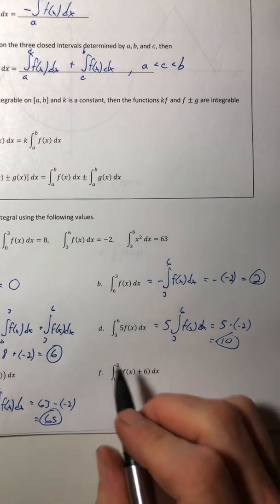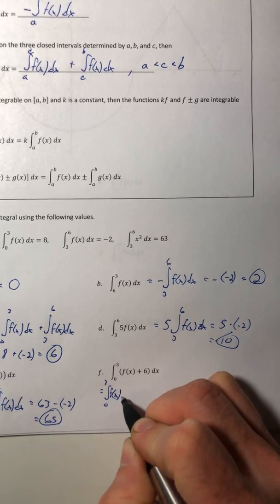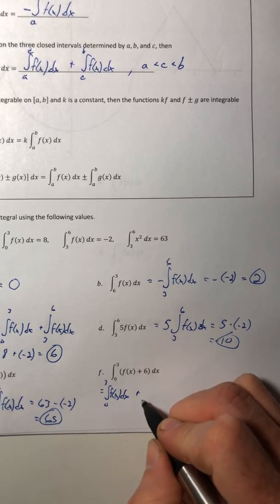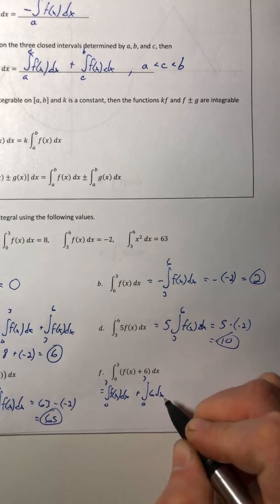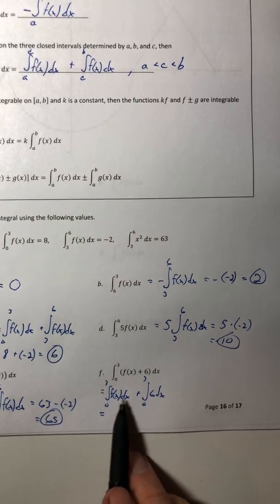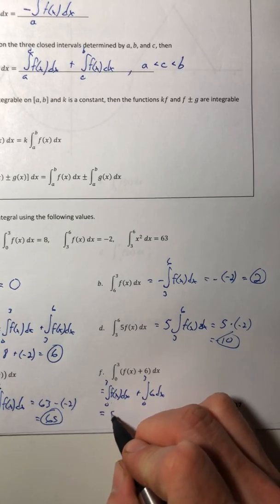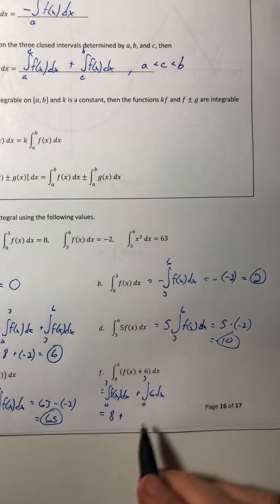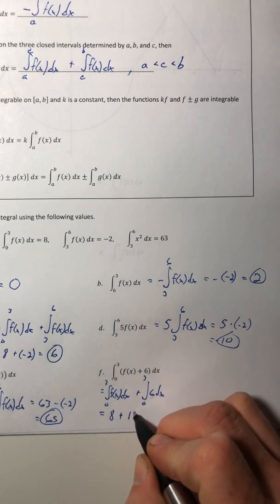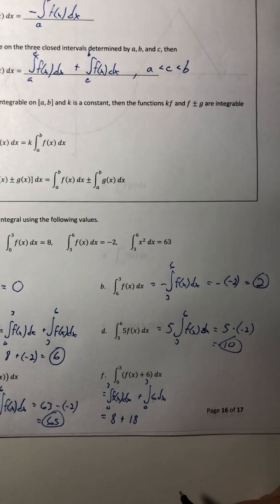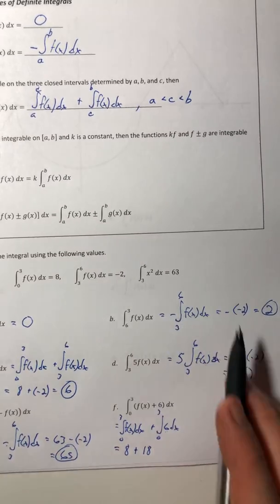Alright, now this last one, I'm going to do the same thing. I'm going to split it. So this one right here from 0 to 3, that was 8. And then this one, the 6, that one's going to equal 18. You're going, well how did you know that? It's like, just not any of these values. Well, aha.